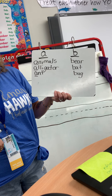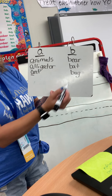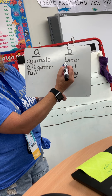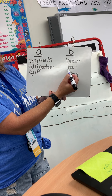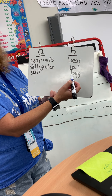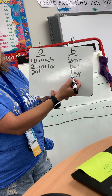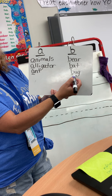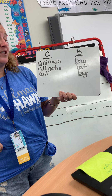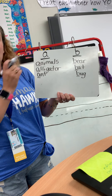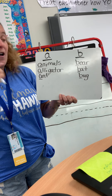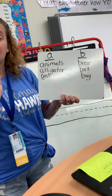For B, I have 'b-b-bear,' and 'b-b-bat,' and 'b-b-bug.' Can you think of other words that will go under A that says A, or B that says B?